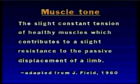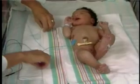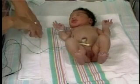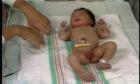When performing tests of neuromuscular maturation, we are making an indirect assessment of brain maturity, which in turn gives us an indirect measure of gestational age. Muscle tone may be defined as the slight constant tension of healthy muscles, which contributes to a slight resistance to the passive displacement of a limb. The newborn infant's neuromuscular examination includes an assessment of both active and passive muscle tone.